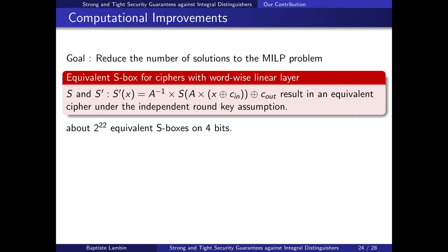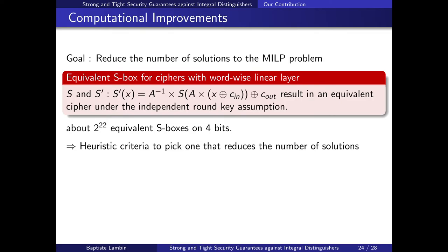To improve this, we try to reduce the number of solutions to these MILP problems. A key observation is that for block ciphers with a word-wise linear layer (working on bytes or nibbles), we can have equivalent representations of the cipher. Specifically, if the cipher uses an S-box S, we can instead use an S-box S', defined as a special case of an equivalence. Assuming independent round keys as before, we have equivalent ciphers — about 2^22 of them if the S-box is over 4 bits. We designed heuristic criteria to pick which representation gives a small number of MILP solutions, allowing us to enumerate them and compute the lambda_{u,v}'s.